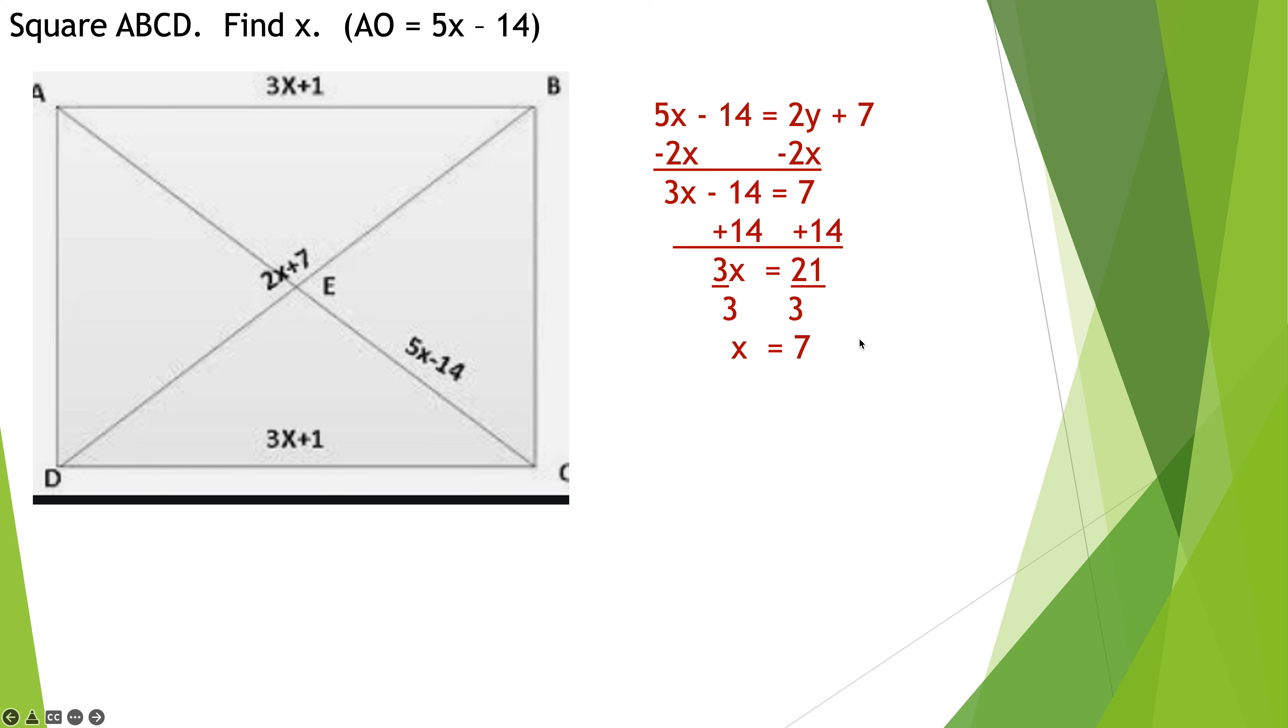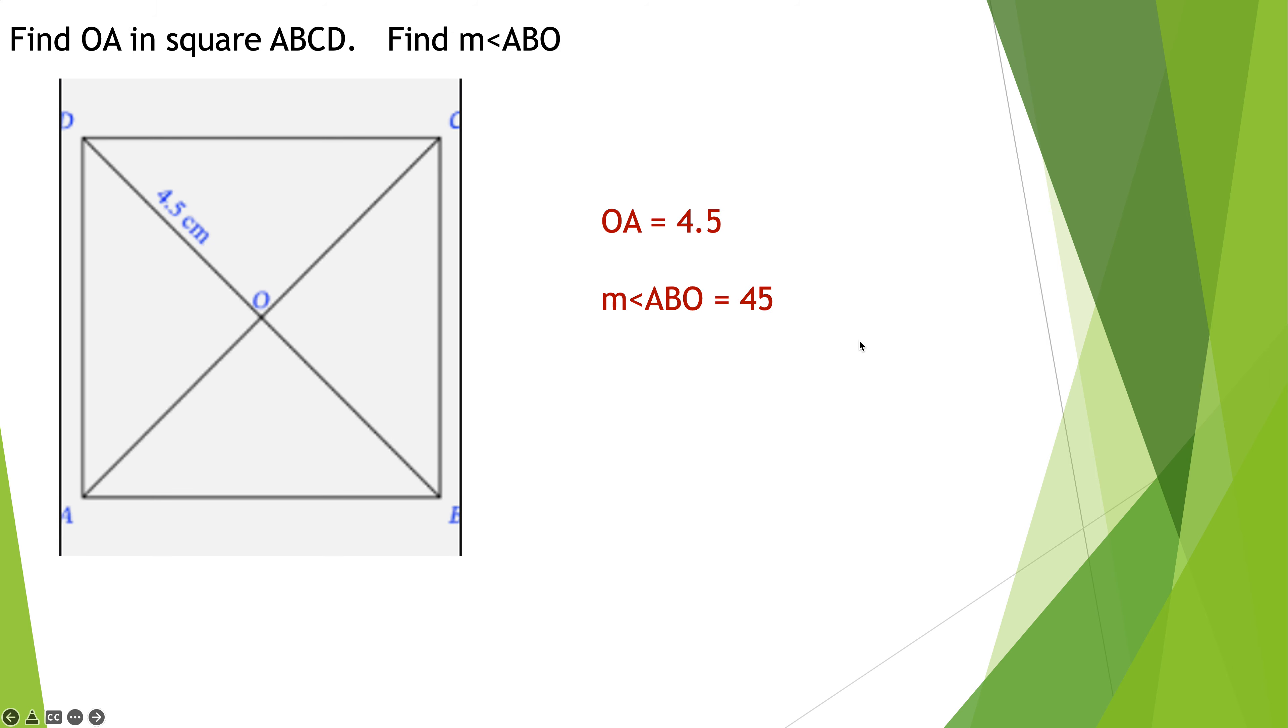Find O, A. Well, all of these pieces are going to be congruent because a square is a type of rectangle and the diagonals are congruent and they all split each other. So, O, A is going to also be 4 and a half. And as far as angle ABO goes, A to B to O, that has to be 45 degrees because a square is a type of rhombus and a rhombus bisects the vertices. And remember, a vertice of a square is 90 degrees.